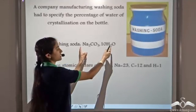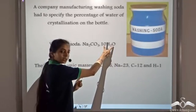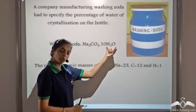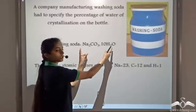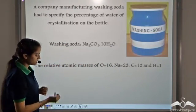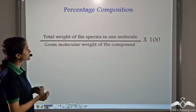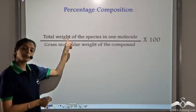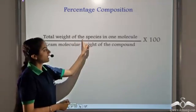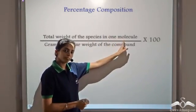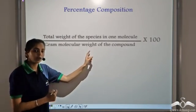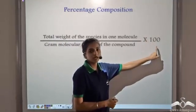This is the entire washing soda, and we have to find the percentage composition of the water of crystallization species. To do that, we take the amount of this species divided by the total amount and multiply by 100. That is, the total weight of the particular species present in one molecule, divided by the gram molecular weight of the compound, multiplied by 100.